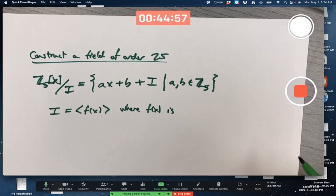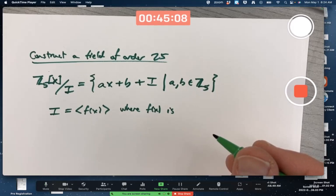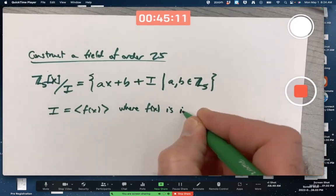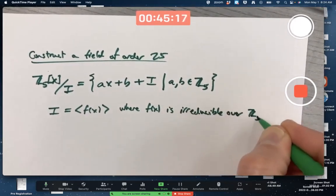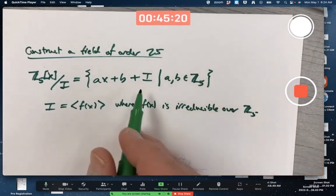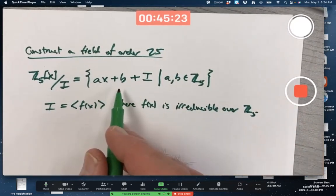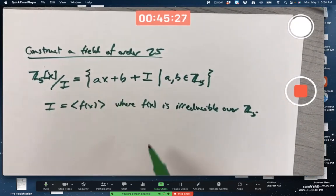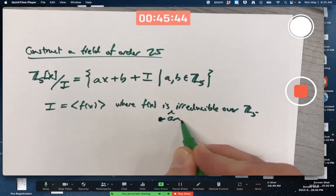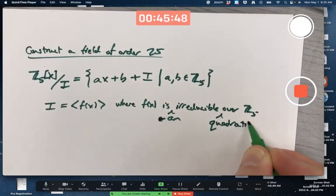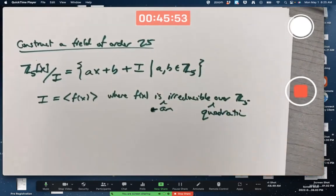It's got reducible in it - irreducible over Z5, and that's not quite good enough yet. But if the representatives are going to be linear, f of x better be quadratic, so that you can, for example, take x squared plus I and reduce it to something linear. Let's put the word 'and' in here, and the word 'quadratic' in here.